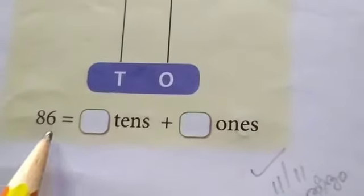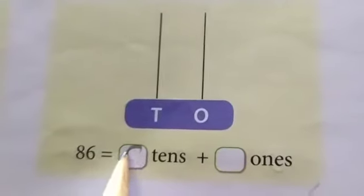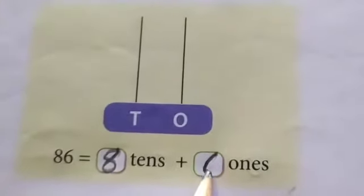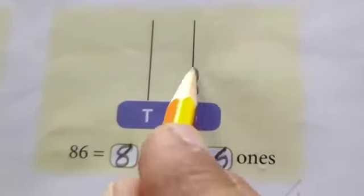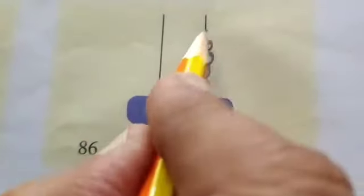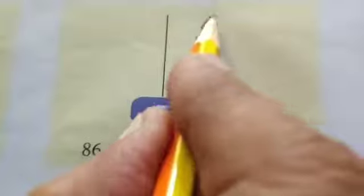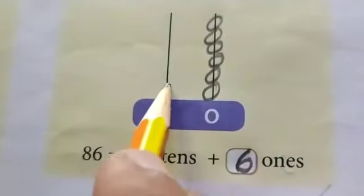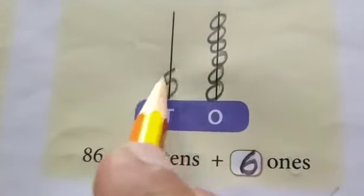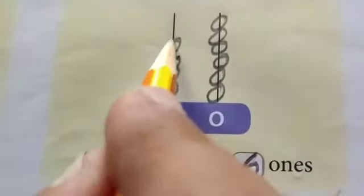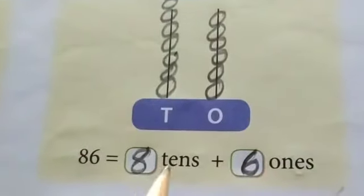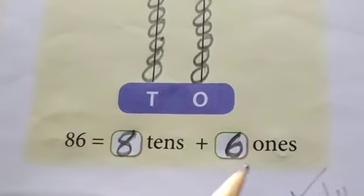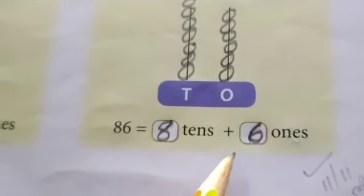The next number is eighty-six. Eighty-six has eight tens and six ones. Six ones and eight tens. Eight tens make eighty. Eighty plus six — eighty-six.